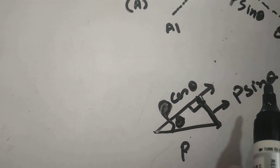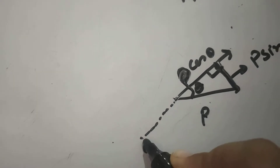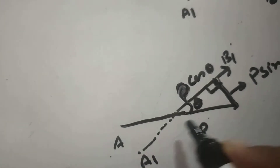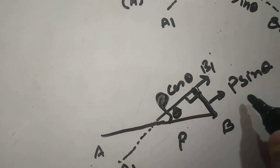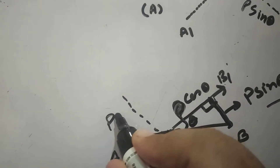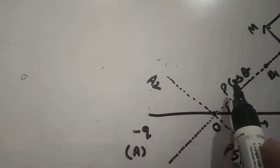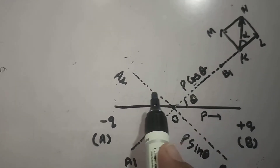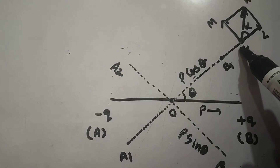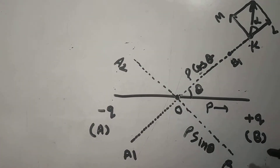If I extend this, you can see this becomes A1B1 and this is A and B. So this component is P cos theta and this component is P sin theta, which is perpendicular to this line. So the component along A1B1 is P cos theta and the component along A2B2 is P sin theta. Point K lies on the axial line of A1B1 and the equatorial line of A2B2.